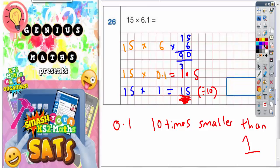Now what we've got to do is using our answer of 1.5, we've got to add it to this answer of 90 here. Because we've got 6 lots of 15, which is 90, and 0.1 lots of 15, which is 1.5. So 90 add 1.5.